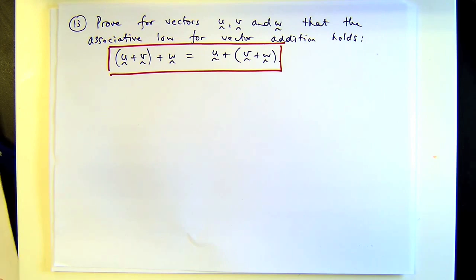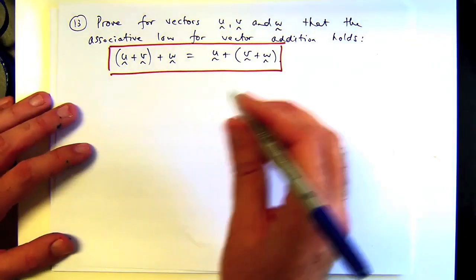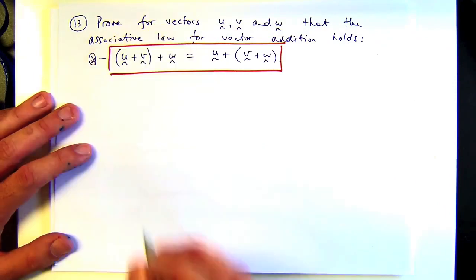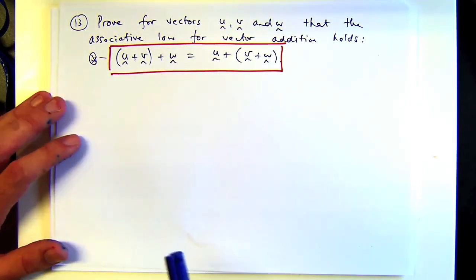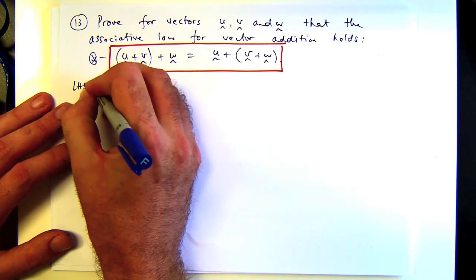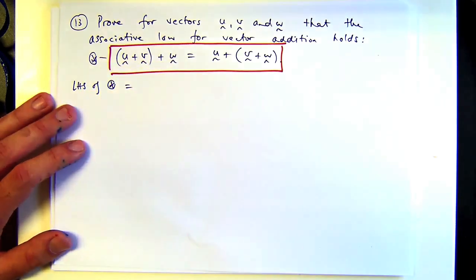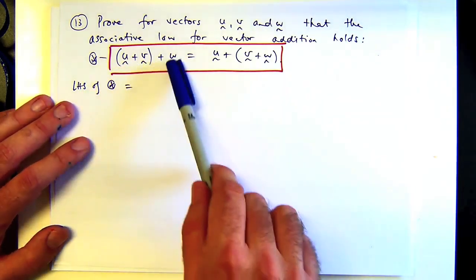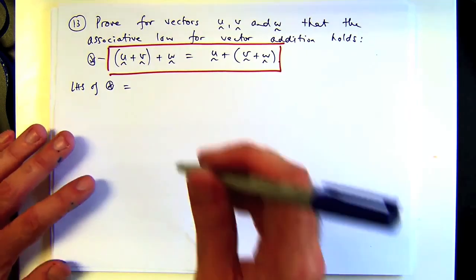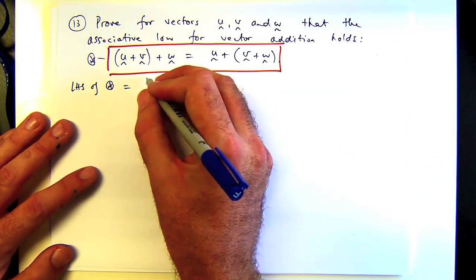All right, so let's call this star and do the old chestnut where you show the left-hand side equals the right-hand side, right. Now I'm going to write this out in component form, so it's something like this.